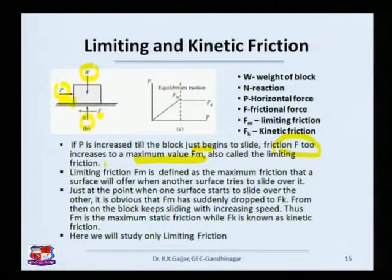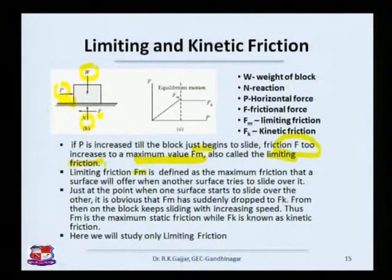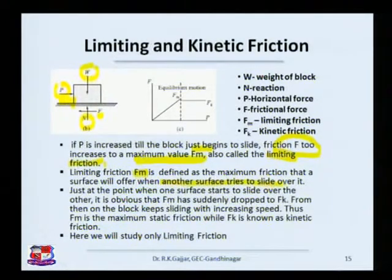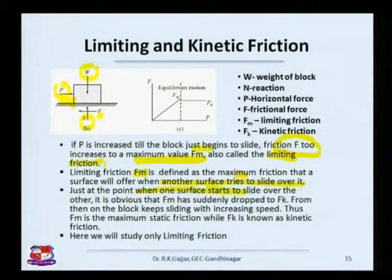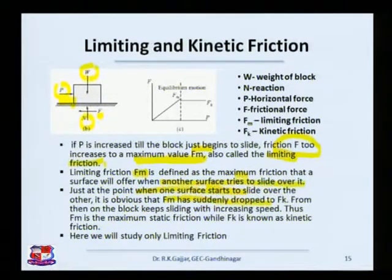The friction will keep on increasing till it reaches its maximum value Fm — this is the maximum or limiting friction. Limiting friction Fm is defined as the maximum friction that a surface will offer when another surface tries to slide over it. Just at the point when the surface starts to slide, Fm has reached its maximum value; it cannot increase anymore, it cannot resist the horizontal force anymore, and therefore Fm suddenly drops.